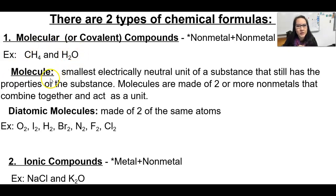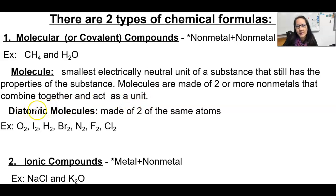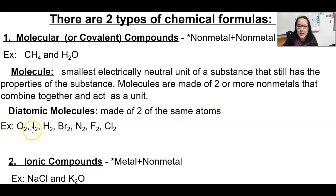A molecule is the smallest electrically neutral unit of a substance that still has the properties of the substance. Molecules are made of two or more non-metals that combine together and act as one unit. Diatomic molecules are made up of two of the same atoms. There are seven elements that only exist in pairs: oxygen, iodine, hydrogen gas, bromine liquid, nitrogen gas, fluorine gas, and chlorine gas.